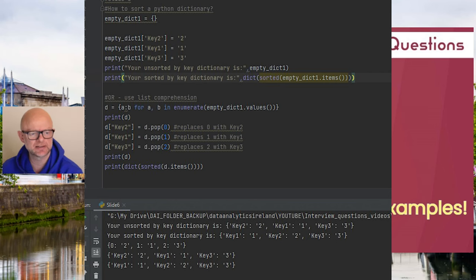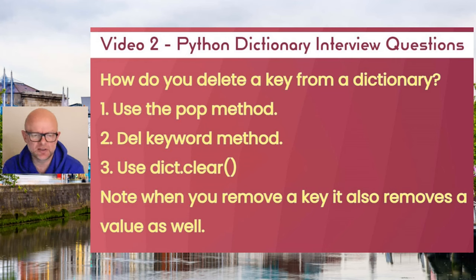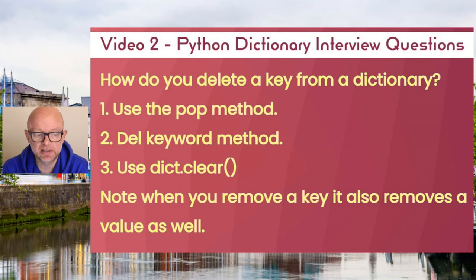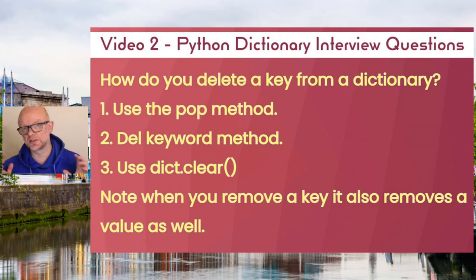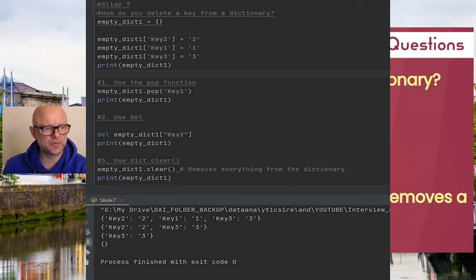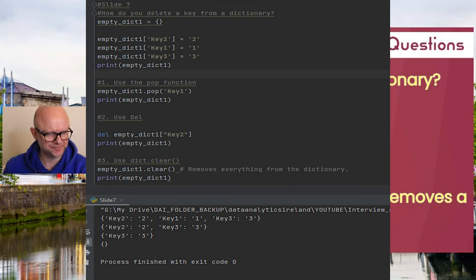You may be asked how to delete a key from a dictionary. There are three approaches: the pop() method, the del keyword, or dict.clear(). Note that if you remove a key, its respective value is also removed — they're linked, so if the key goes, the value goes too. Be conscious of that if you still need that value in your program. Let's go to the code — we'll create an empty dictionary, add values as before, and demonstrate each approach.